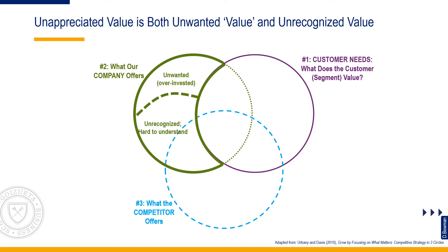It is important to distinguish between two types of offerings captured here. The first we will call unwanted — these are classic over-investments where you are providing things that the customer does not and will not value. Is there something here you can stop doing? These can be difficult to uncover without engaging the customer, because from a strictly internal perspective it is hard to admit you are doing things that are not creating value. The second type are offerings you provide that the customer in theory should value but does not because they are not salient or it is difficult to see the value. Can these be moved to a point of difference through some communication or education?